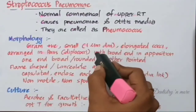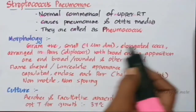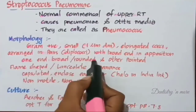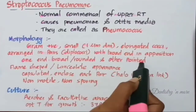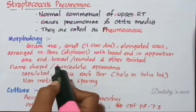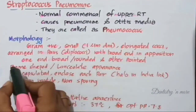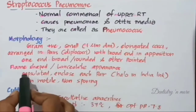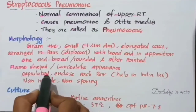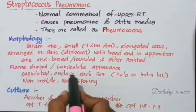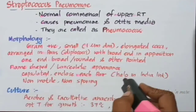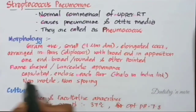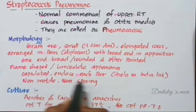They have one end that is broad or rounded and the other is pointed, giving a flame-shaped or lanceolate appearance. They are usually capsulated and the capsule encloses each pair; it can be demonstrated as a halo in India ink. They are non-motile and non-sporing.